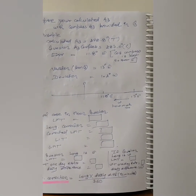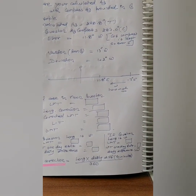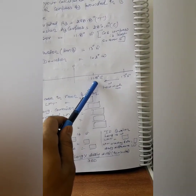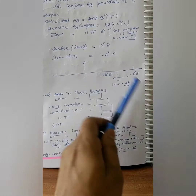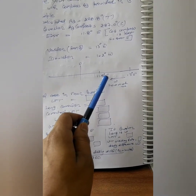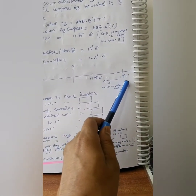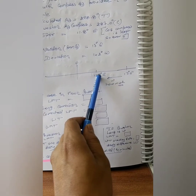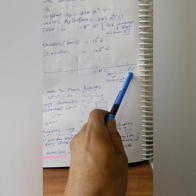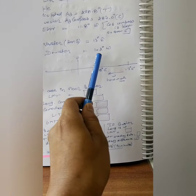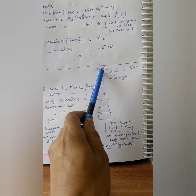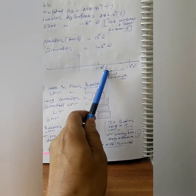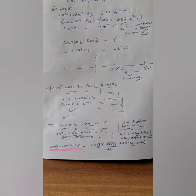To find the deviation, draw a line: write 11.8° East as the compass error (East side) and 13° East as the variation. From 13° East you move towards West by 1.2° to reach 11.8° East — so the deviation is 1.2° West. This is how you cross-check your deviation answer.